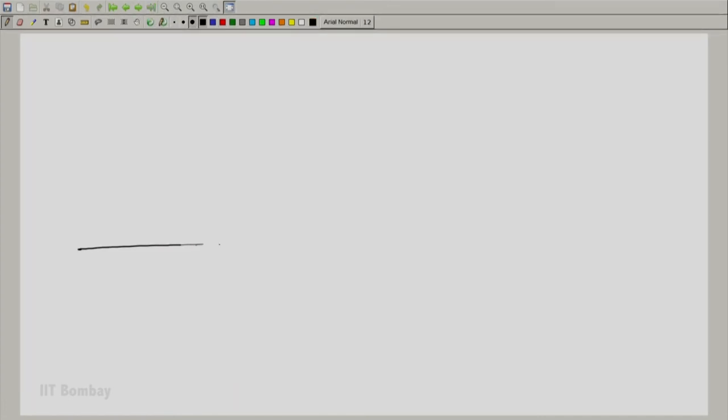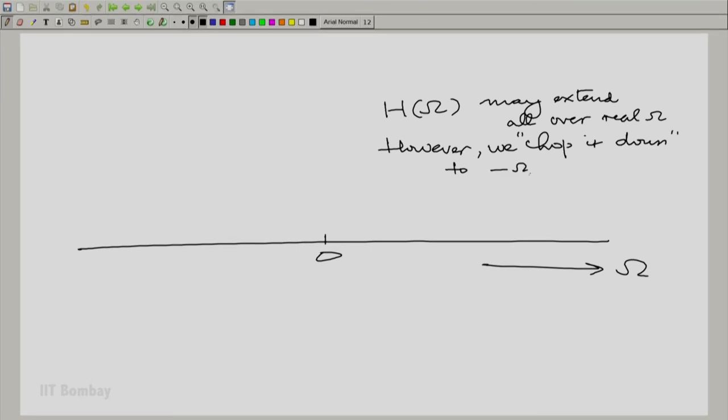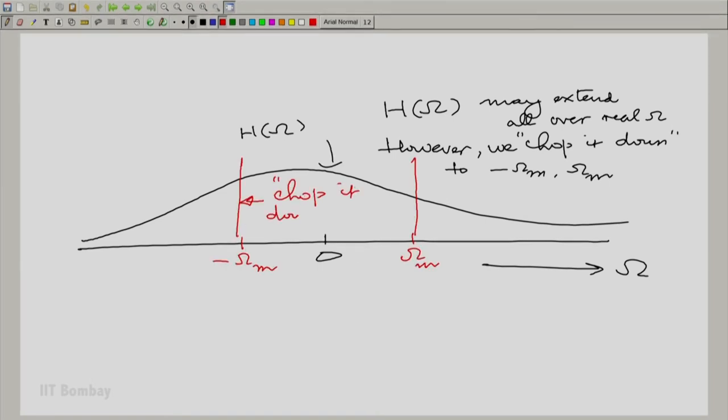What I am saying is the following: you had this original frequency response capital H of omega as a function of the angular frequency omega. It may extend all over capital omega. However, we restrict it, we chop it down. If you had something like this as capital H omega, you cut it down.